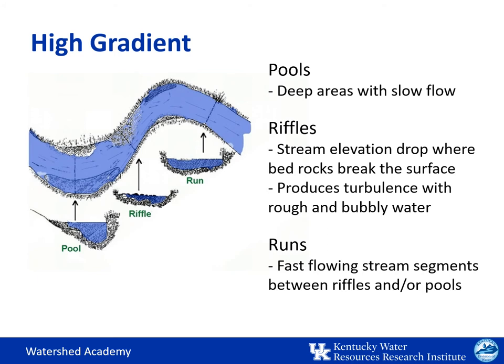High gradient streams produce a greater range of flow depths and speeds, including pools — the deep areas with slow flow — riffles where the stream elevation drops and bedrock breaks the surface creating turbulence with rough, bubbly, oxygenated water, and runs — the fast, shallower stream segments between the riffles and pools. For this reason, high gradient streams have a good variety of niche habitats.